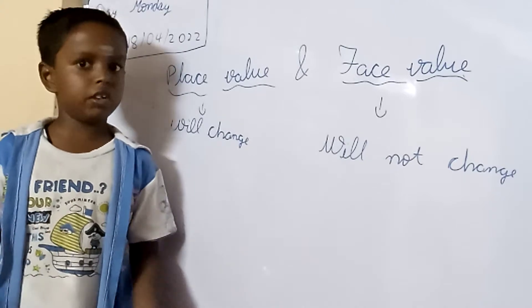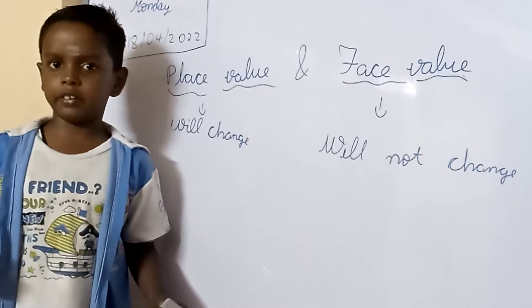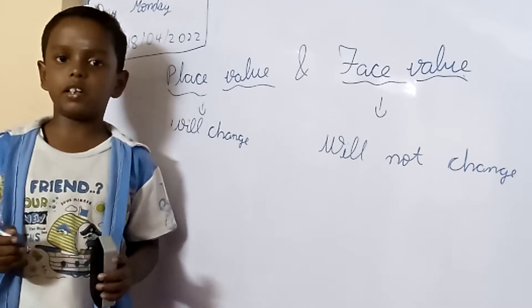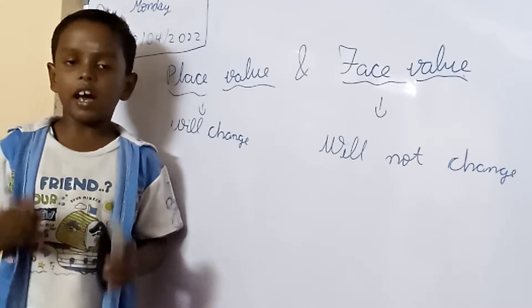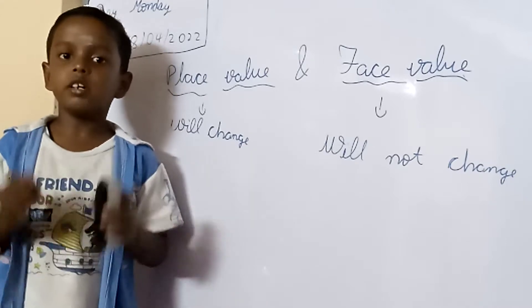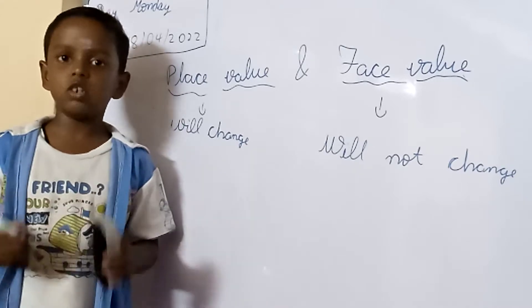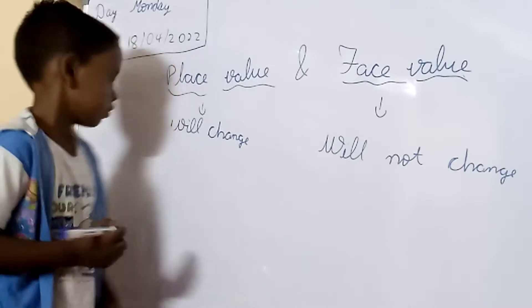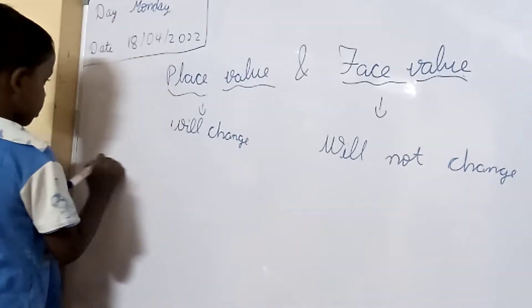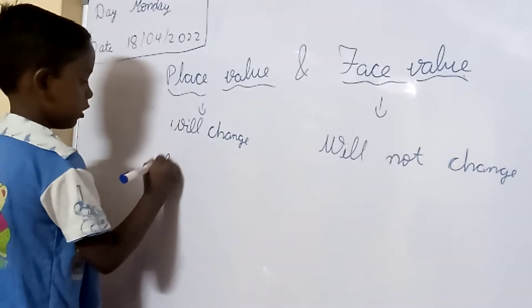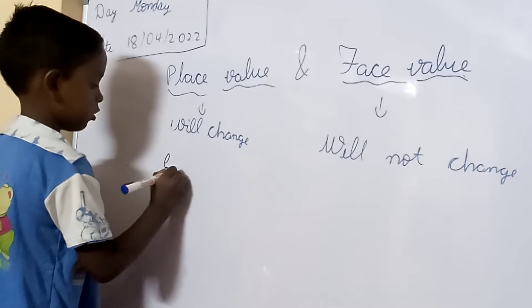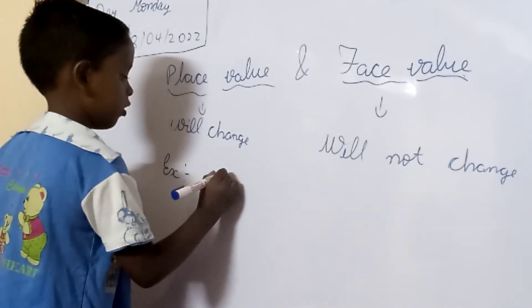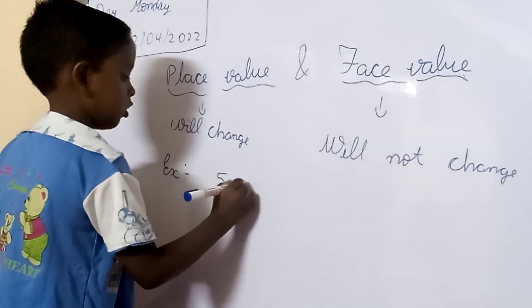Face value will not change. First, let's see place value. As I told, place value will change. Examples — 532. We should find the place value.